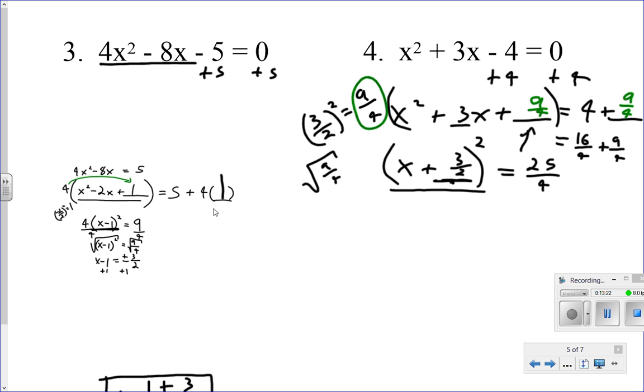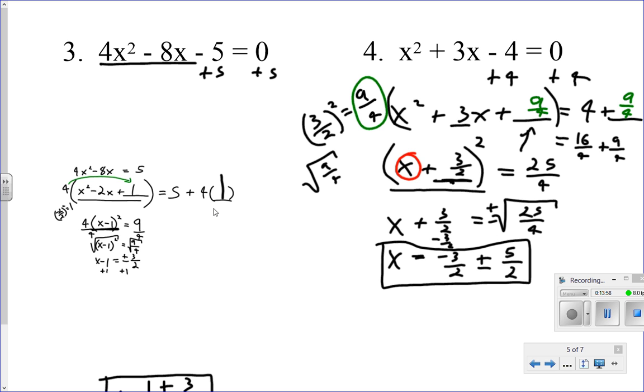Now I want to solve for my x value. So I'm going to square root both sides. So I get x plus 3 halves equals the square root of 25 over 4. Remembering plus and minus. And then I have x is equal to, so I subtract 3 halves from both sides. Minus 3 halves. Plus or minus square root of 25 is 5. Square root of 4 is 2.